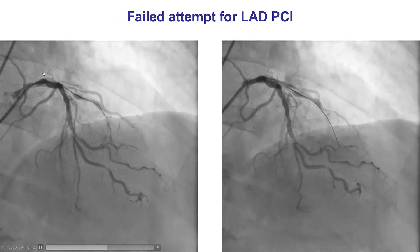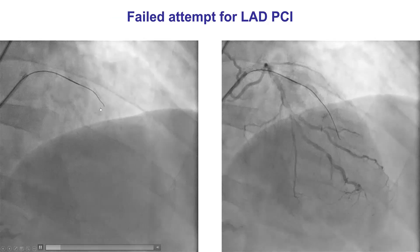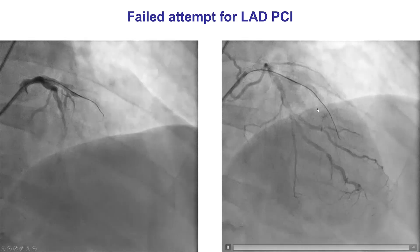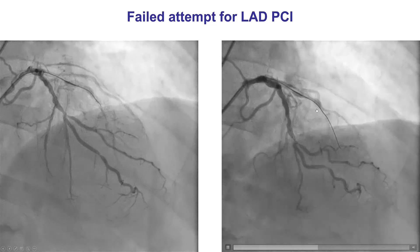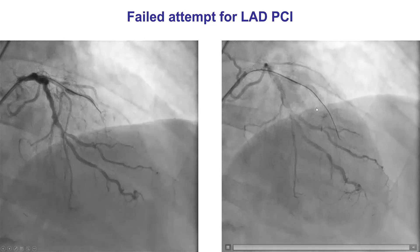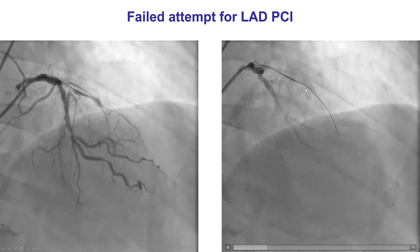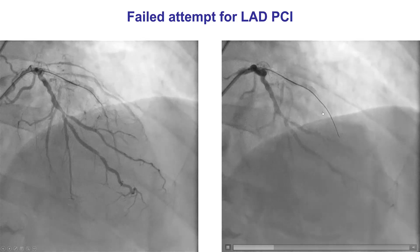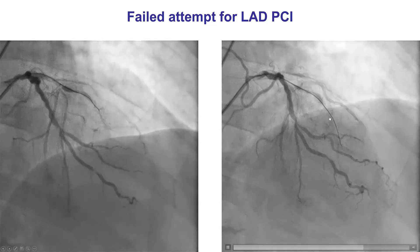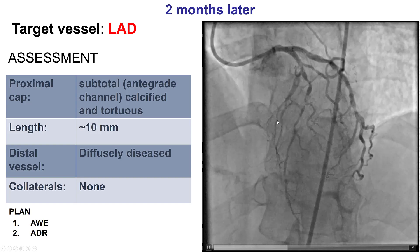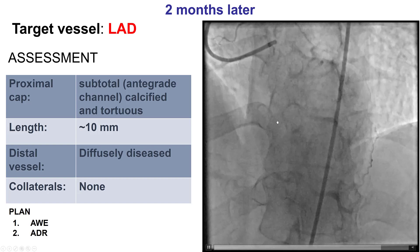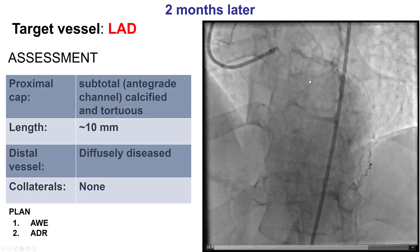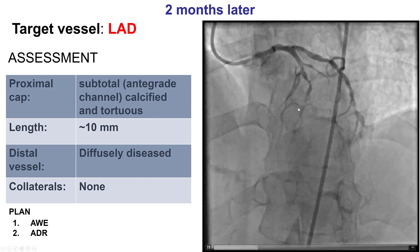The patient underwent an attempt for recanalizing the LAD; however, the attempt was unsuccessful and was complicated by acute vessel closure. Fortunately, the patient remained stable and did not require emergency surgery, likely because he had a good collateral network, and was then referred for a repeat attempt for revascularization. In the meantime, there has been restoration of flow into the LAD.